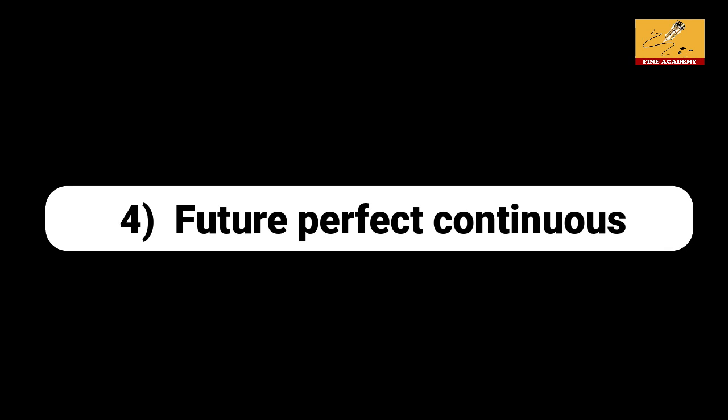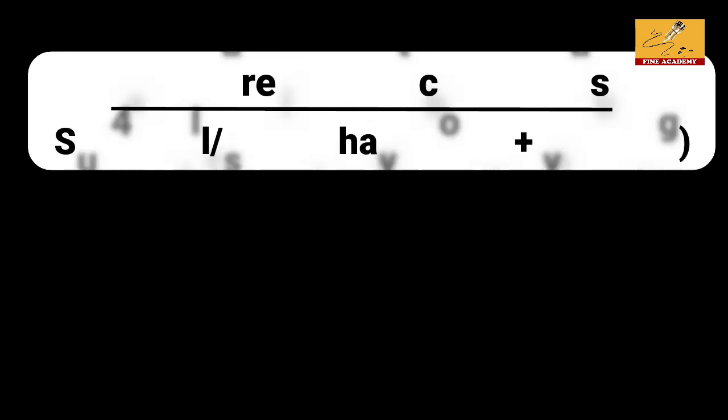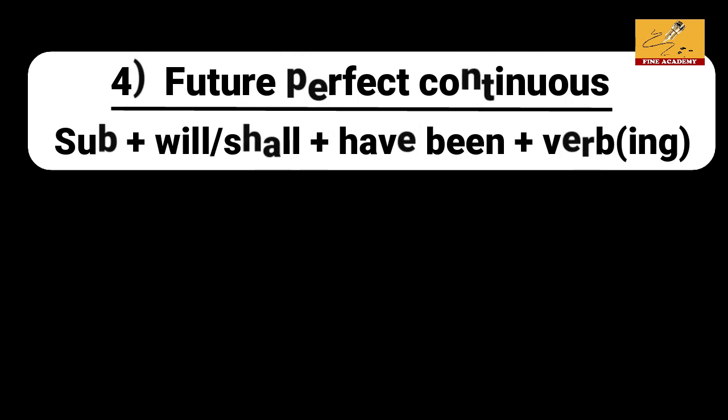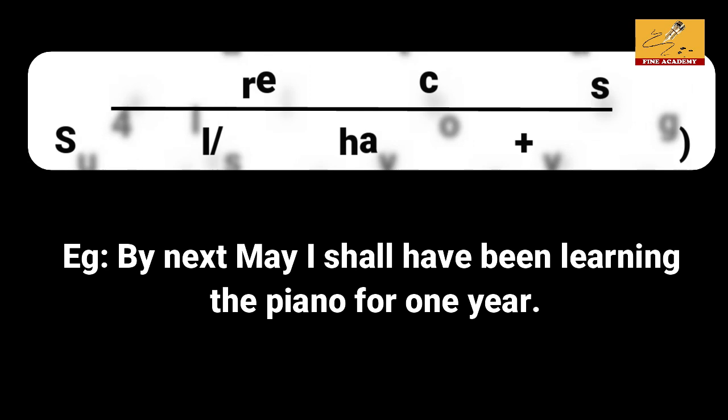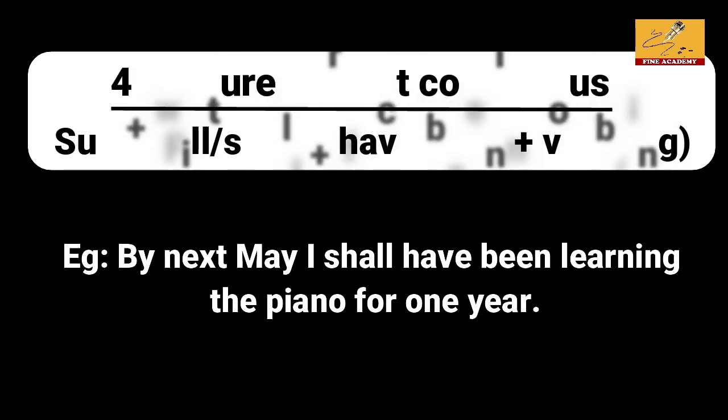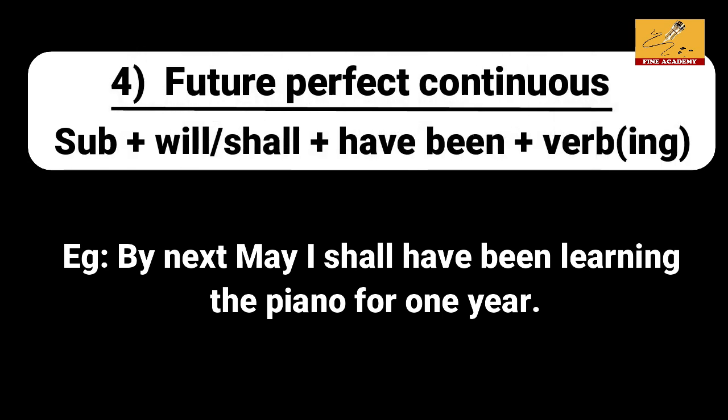The last type is future perfect continuous. Structure: subject plus will/shall plus have been plus verb ing form plus object. For example: 'By next September, I shall have been learning the piano for one year.'